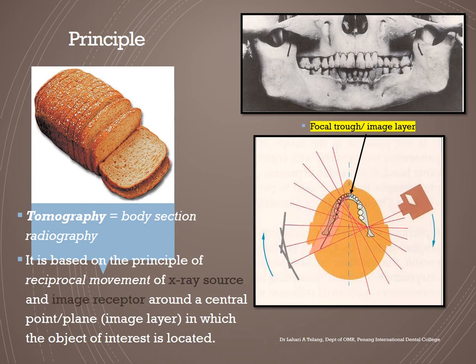Panoramic radiography is based on the principle of reciprocal movement of the x-ray source and the image receptor around a central point or plane in which the object of interest is located. The x-ray machine and receptor move — let's say in a clockwise direction — reciprocally at the same time, capturing multiple images as the machine shoots multiple x-rays and the receptor captures images as it moves along the head. The patient remains stationary throughout.